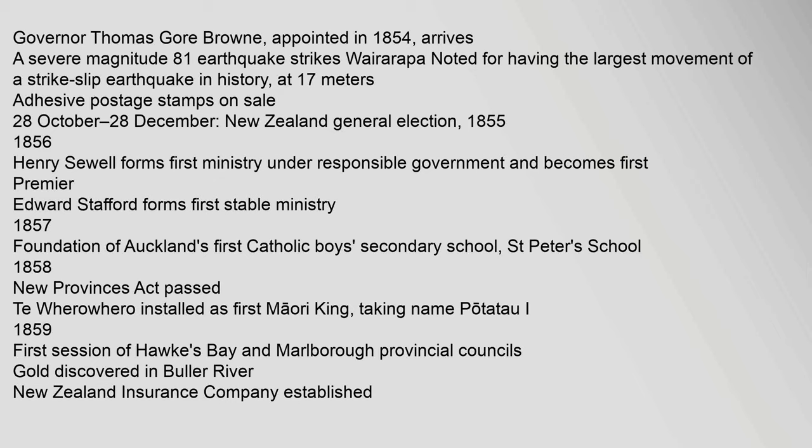28 October – 28 December: New Zealand general election. 1855–1856: Henry Sewell forms the first ministry under responsible government and becomes first Premier. Edward Stafford forms the first stable ministry. 1857: Foundation of Auckland's First Catholic Boys Secondary School, St Peter's School. 1858: New Provinces Act passed. Te Wherowhero installed as first Maori king, taking the name Potatau I.